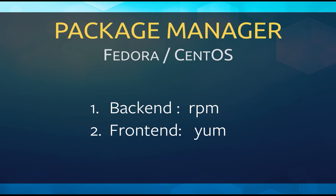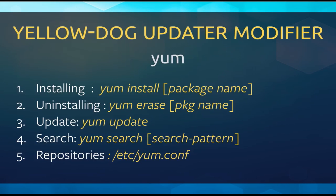Let's go ahead and see the package managers that come with Fedora or CentOS. As you are aware, these are distributions maintained by Red Hat. The backend tool for these distributions is RPM, which stands for Red Hat Package Manager, and the front-end is the YUM Package Manager tool. YUM stands for Yellow Dog Updater Modifier. To install a program using YUM, type yum install and then give the package name. For uninstalling, do yum erase and package name. For updating, yum update will update all programs currently installed. To search if a package exists in the OS repositories, type yum search and give the search pattern. The repository for YUM is in /etc/yum.conf.